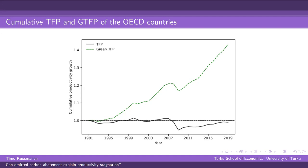We could think of green TFP as a counterfactual — what productivity development might have been if no abatement were required, or if countries could continue to emit greenhouse gases freely without restrictions. There has been huge productivity growth not in terms of conventional TFP, but when we take into account the reduction of greenhouse gases, the growth looks rather impressive. I find this figure very compelling.